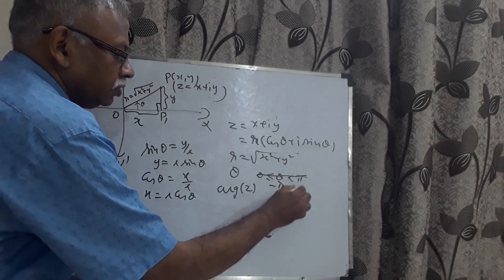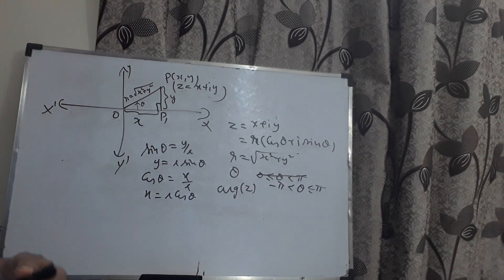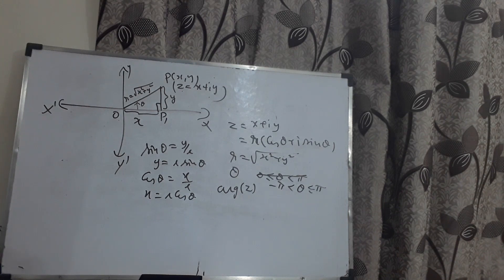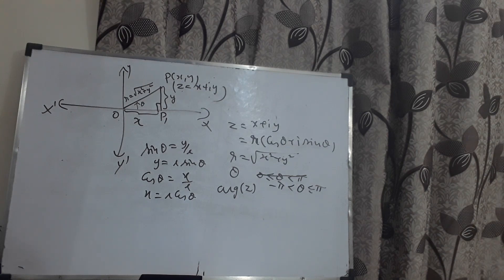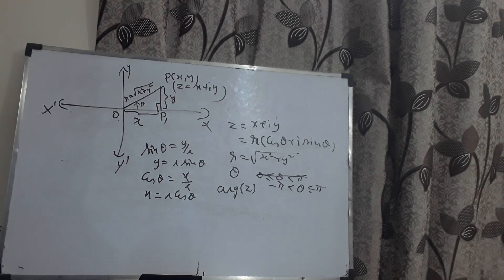The value such that minus pi less than theta less than pi is known as the principal value of the argument. There are many values lying between 0 and 2 pi satisfying the condition for the argument, but the value satisfying minus pi less than theta less than pi is specifically called the principal value of the argument. We can represent any complex number in the form r times (cos theta plus i·sin theta).